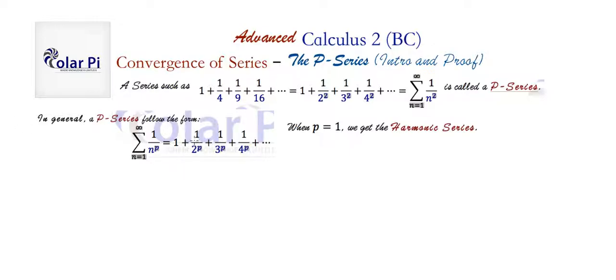Remember, the harmonic series is 1 plus 1 half plus 1 third plus 1 fourth and so on. So we know that when P is equal to 1, this series diverges because we know that the harmonic series diverges.